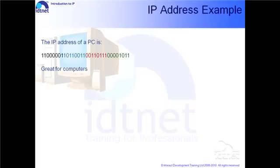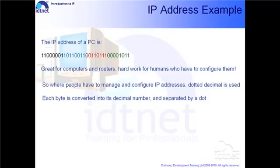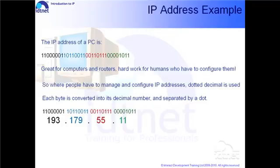Well, that's great for computers and routers, but hard work for us humans who have to configure them. So where people have to manage and configure IP addresses, dotted decimal is used. Each byte is converted into its equivalent decimal number and separated by a dot. So the address we just said now becomes 193.179.55.11, and that's certainly more friendly than binary.